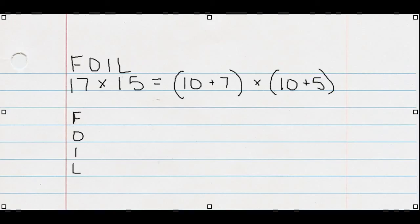Now FOIL is actually an acronym. It's to help you keep the process straight. Each of the letters in the word FOIL means something different. So here's what all the words mean. F is for first, O is for outside, I is for inside, and L is for last.